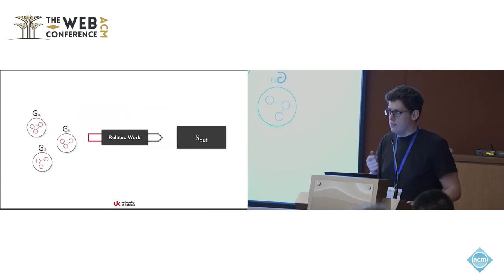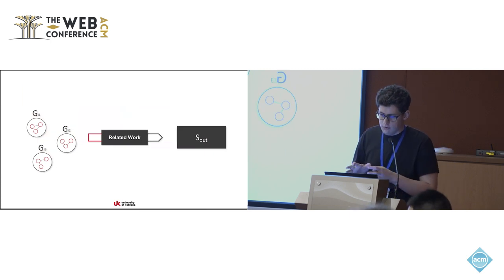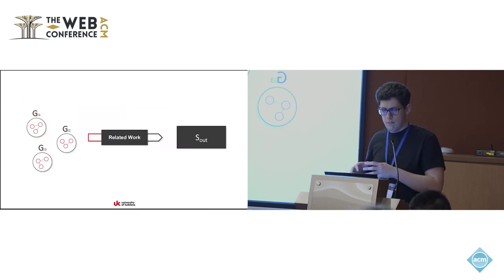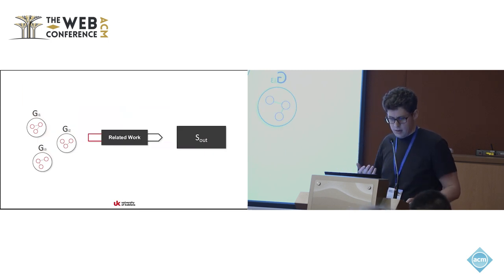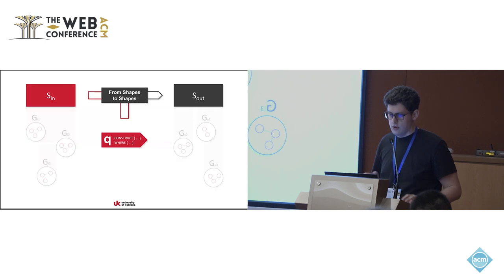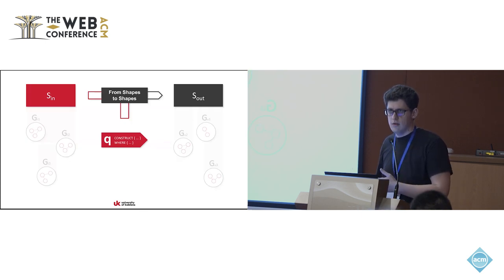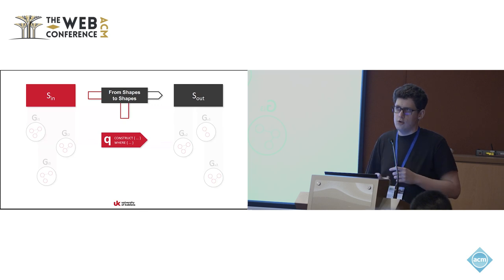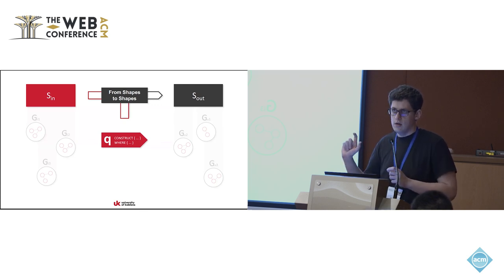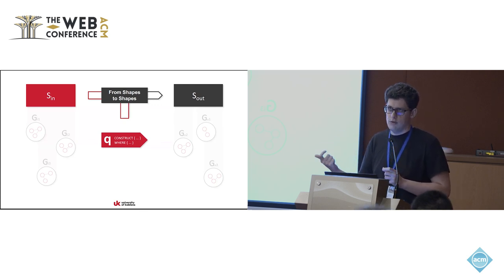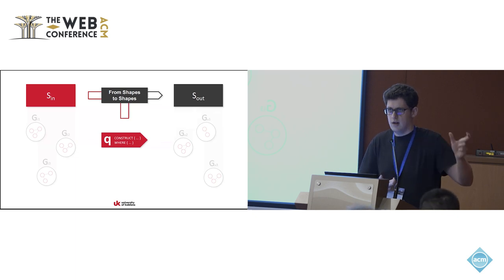This is different from related work about inferring shapes from instance data directly, because our approach is independent of any concrete instance data in these graphs. So if you imagine a query as a function on graphs, we're basically taking the query and a set of shapes as the input type, and inferring the result type again as a set of shapes.